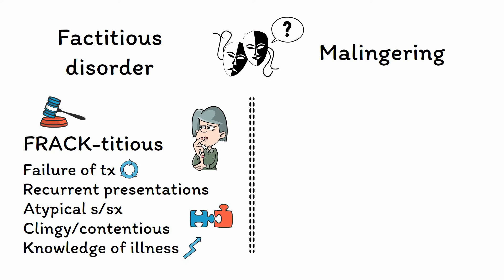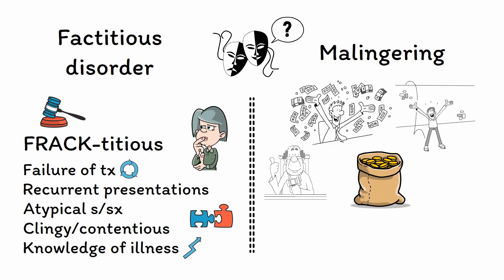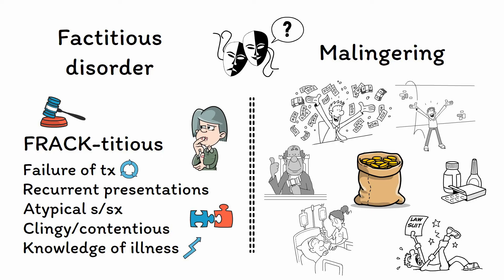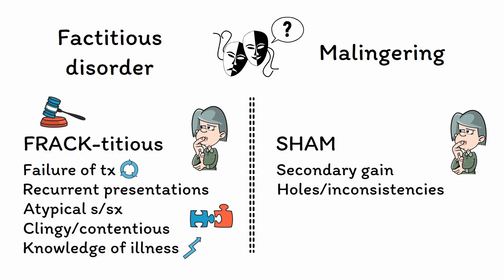In contrast to factitious disorder, where the main draw is primary gain or all the benefits intrinsic to the sick role, in malingering the goal is secondary gain — an extrinsic benefit that someone is getting from being sick — including disability payments, an excuse from work or military service, a lighter sentence in a criminal case, financial compensation for a fake injury, access to drugs like painkillers, or admission to a hospital with its associated food and shelter. Like with factitious disorder, diagnosing malingering can be hard, as a definitive diagnosis requires clear evidence of fabrication. However, there are a few key clues that can help. You can use the mnemonic SHAM, which stands for: clear evidence of Secondary gain, Holes or inconsistencies in the patient's story, a history of Antisocial traits or behaviors, and a pattern of Missing medical appointments or treatments that do not directly benefit them.